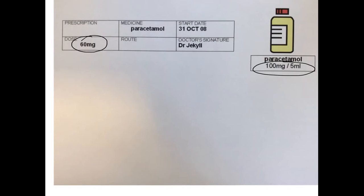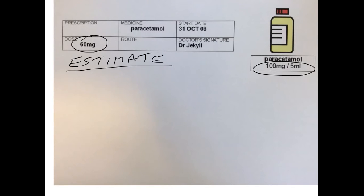So if we do an estimation first — we know the patient needs 60mg, and we know that there is 100mg of the drug in every 5ml of liquid. So roughly half, or slightly over half, of 5ml would give you 60mg. So let's estimate roughly 3ml of liquid as required.